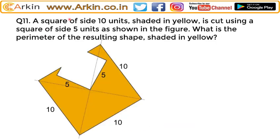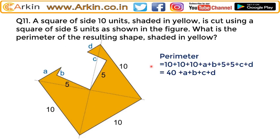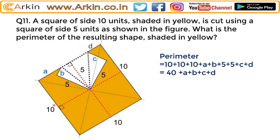A square of side 10 units shaded in yellow is cut using a square of 5 units as shown in the figure. What is the perimeter of the resulting shape shaded in yellow? If we name the sides — this as A, this as B, this is 5, 5, this is C, and this is D — the perimeter required is 10 plus 10 plus 10 plus A plus B plus 5 plus 5 plus C plus D. Let's join some perpendicular lines.